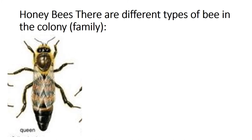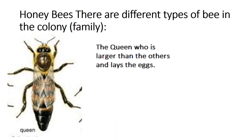Honeybees are different types of bees in the colony. جو مکھیاں ہیں ان کی مختلف اقسام ہوتی ہیں ایک colony میں۔ جیسے queen جو ہے — who is larger than the others and lays the eggs. Queen سب سے بڑی ہوتی ہے اور اس کا کام صرف انڈے دینا ہوتا ہے۔